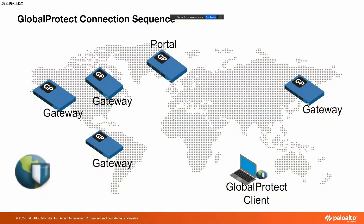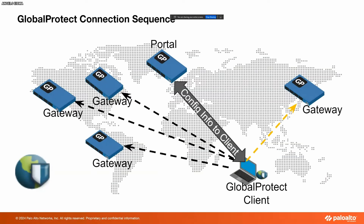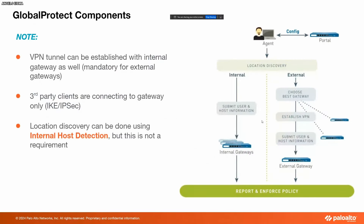Now the connections. The first thing the GlobalProtect client will do is connect to the portal, and then it will retrieve the configuration — that will include the list of gateways as well as how the app should behave, such as pre-logon, user logon, or on-demand type of logon. After the config is retrieved, it will go through the list of gateways and test which has the best connection with least latency. Once it determines that, it will create the tunnel between itself and that gateway.